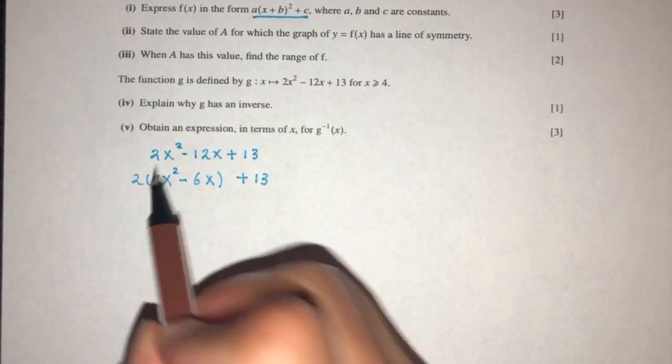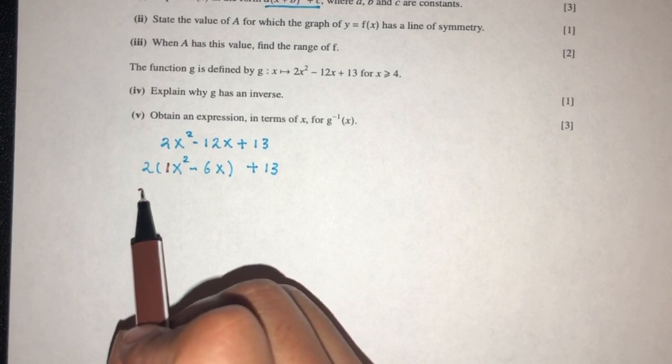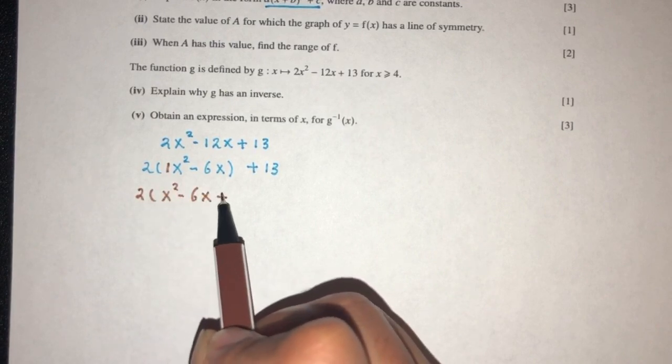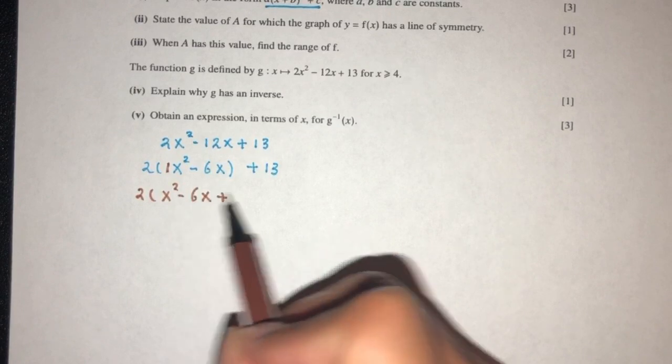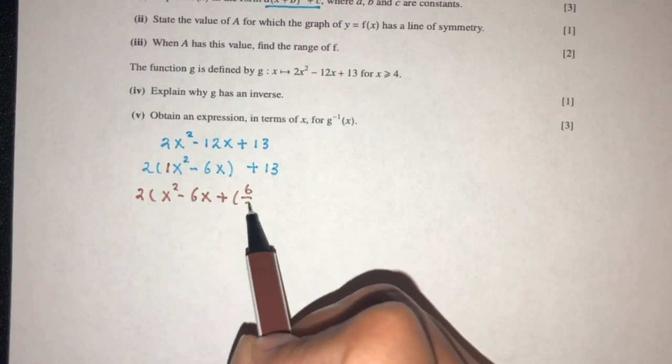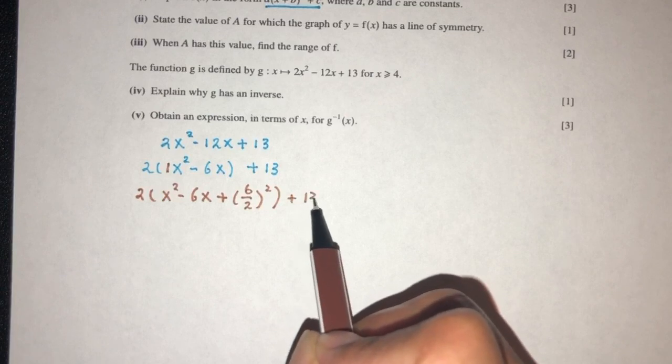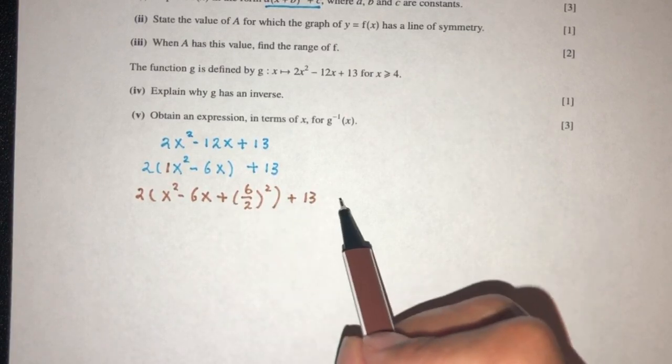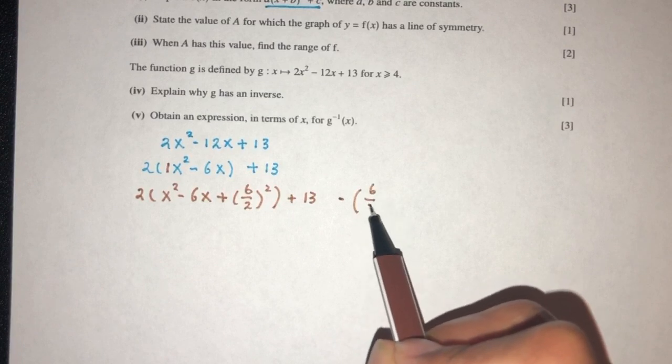Now because this is 1 here, we can proceed to the next step. Now we have 2 here, that should be x squared minus 6x plus something. The value here is 6, we plus 6, divide by 2, square. Now when you plus something, then you also have to minus the same thing, so you don't change your equation.